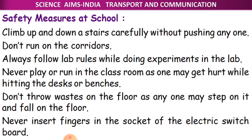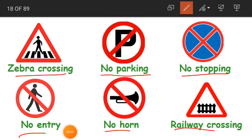We are going to discuss safety measures at school in the next class. I hope you have understood all this. When you go out, especially on roads, please observe all these traffic signals and follow all the rules so that you will be safe and keep others safe too. We will continue in the next class — until then, take care and stay well. Goodbye children.